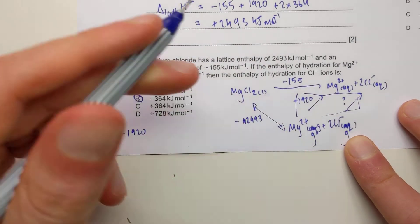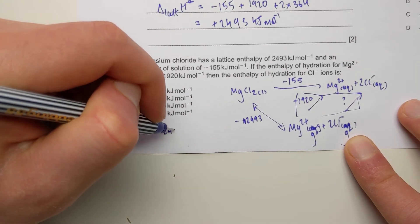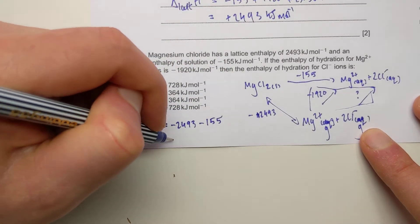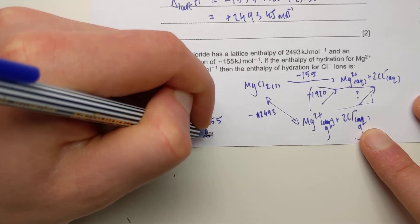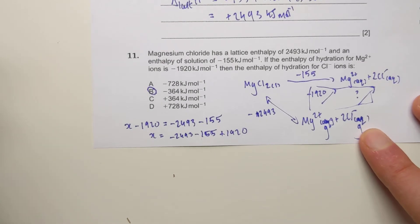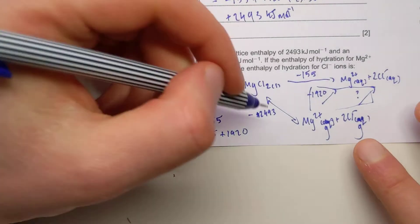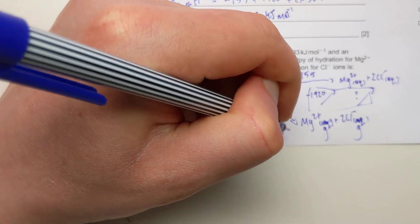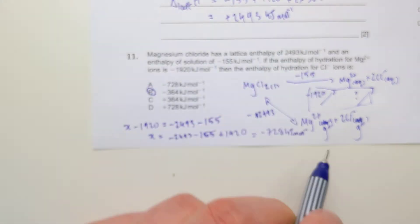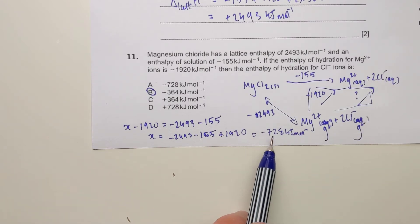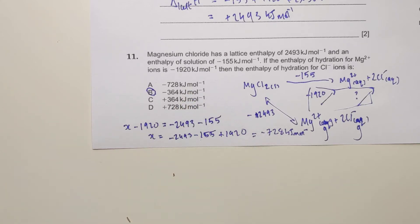Manipulating: x = minus 2493 minus 155 plus 1920. Putting that into the calculator gives minus 728. But wait — this is for two moles of chloride ions going to two moles of chloride in solution. We need it for one mole, so we divide by two: minus 728 ÷ 2 gives minus 364 kJ/mol, which confirms answer B.